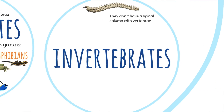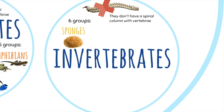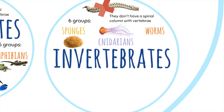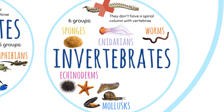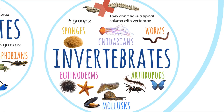Invertebrates don't have a spinal column with vertebrae, and they are divided into six groups: sponges, cnidarians, worms, echinoderms, mollusks, and arthropods — including myriapods, arachnids, insects, and crustaceans.